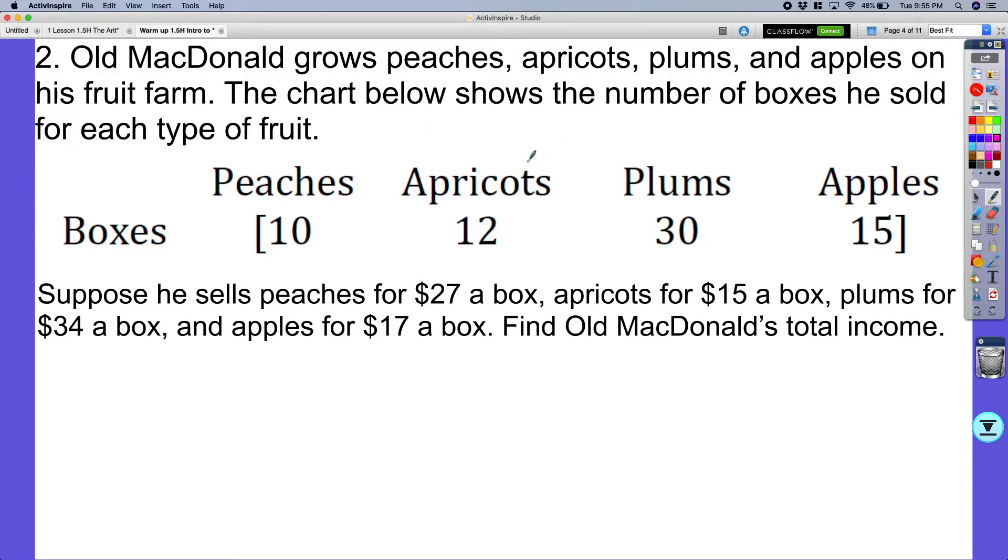So 10 boxes of peaches, 10 boxes of apricots, 12 boxes of apricots, 30 boxes of plums, and 15 boxes of apples. Now the next thing that it gives us is it gives us the amount of money.